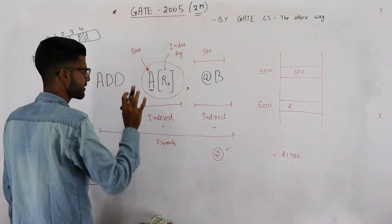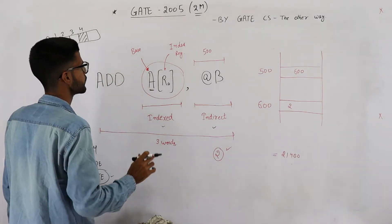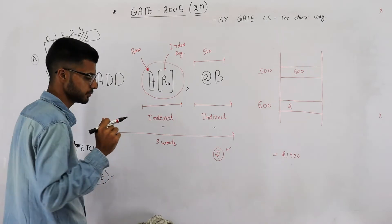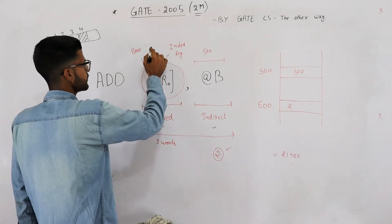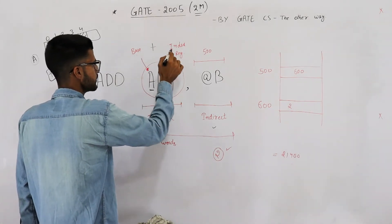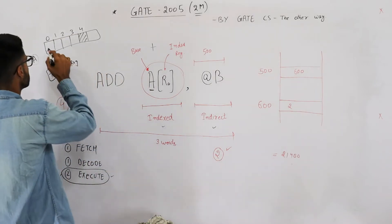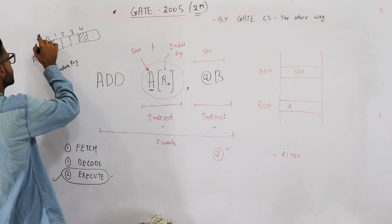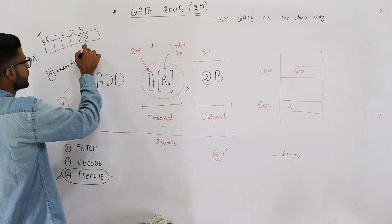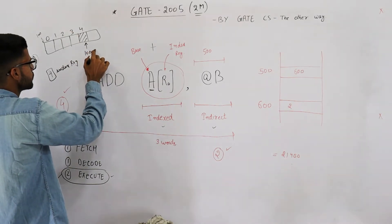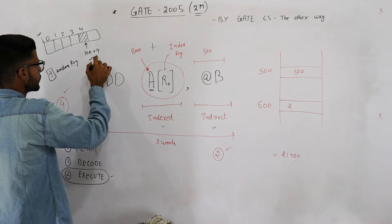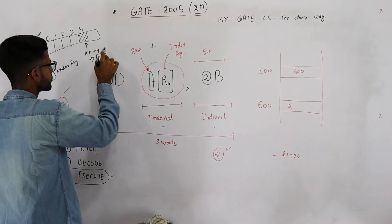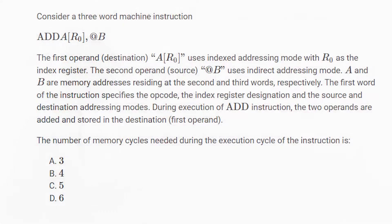And the base of array is specified in instruction itself. So to calculate the effective address, CPU will just add the base and the value saved in index register. For example, base is say 100, then this element is going to be 100 plus 4, which is 104. Anyways, let's read the statement.